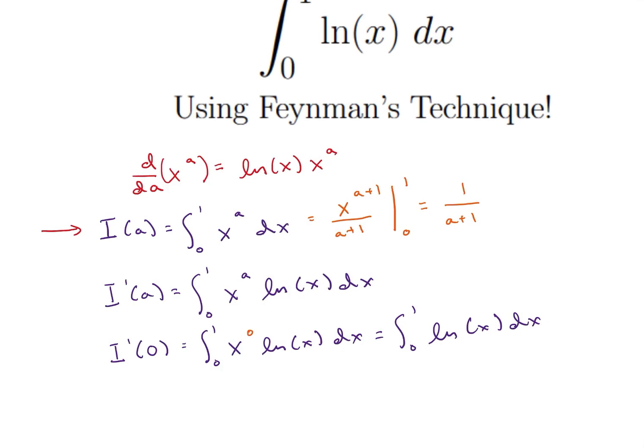So what I want you to notice is that this is i of a still. We just evaluated it. So now, if I come down here, and I wanted to get i prime of a, i prime of a is going to be the derivative with respect to a of 1 over a plus 1. And we can take that derivative. That's going to be negative 1 over a plus 1 squared. So now we have a new expression for i prime of a.